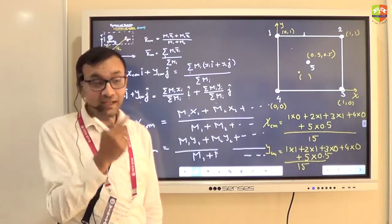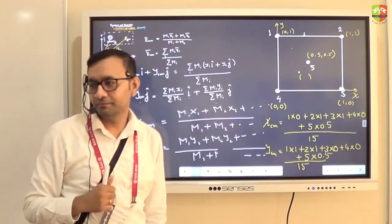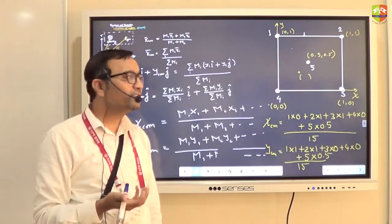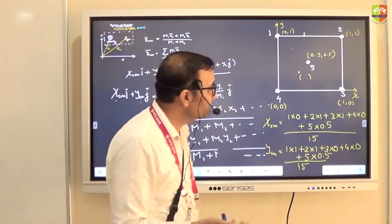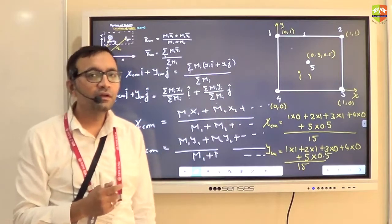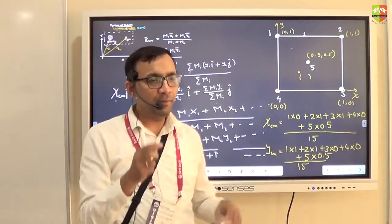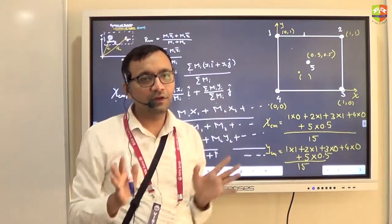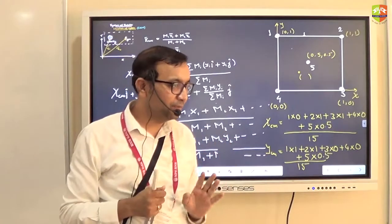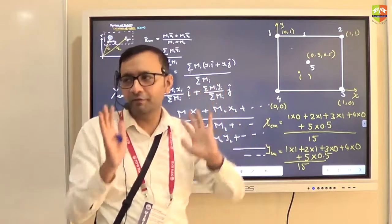What is the assumption we have made when we considered this system of particles? We have not assumed that they form a rigid body. There are simply 5 particles placed at different locations — they could be 5 different independent particles.